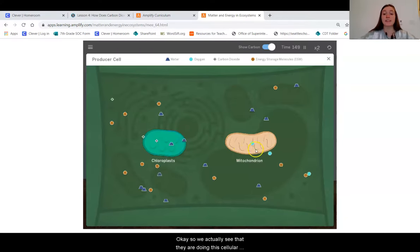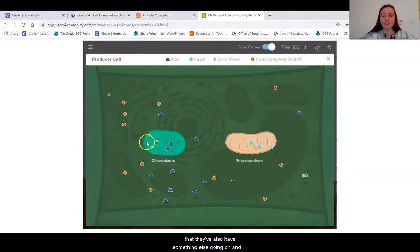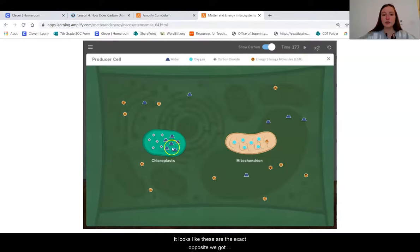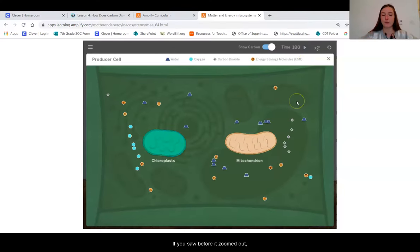Okay, so we actually see that they are doing this cellular respiration process, but you might have noticed that they've also got something else going on, and that is because they're doing photosynthesis. So if I pause for a moment, it looks like these are the exact opposite. We've got photosynthesis happening over here and cellular respiration happening over here. And if we watch carefully, we've got carbon dioxide and water, we've got oxygen and energy. And if you saw before it zoomed out, the exact opposite happened. So they seem to be two different reactions occurring.